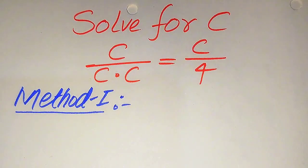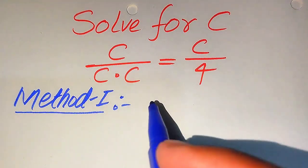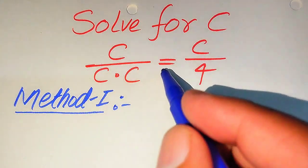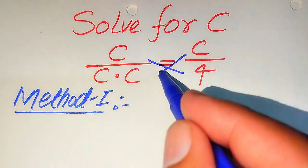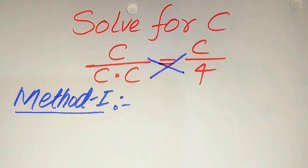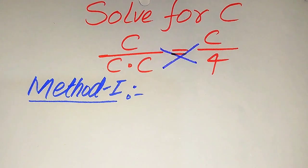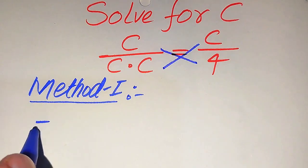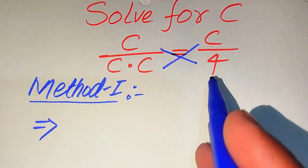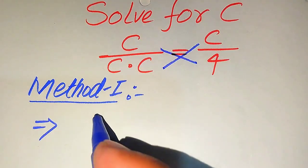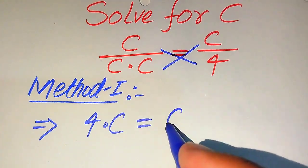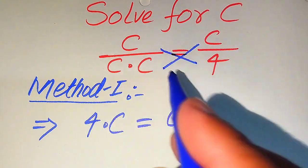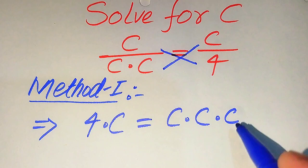Now we move towards the solution of this problem. The very first thing we are going to do is cross multiply the terms, so we multiply c with 4 and we multiply c with c times c. After cross multiplication, when we multiply 4 with c it becomes 4 times c, and when we multiply c with c times c it becomes c multiplied three times.